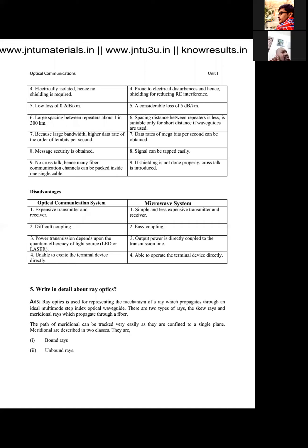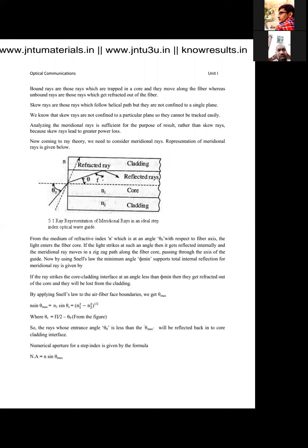Meridional rays are classified into two types: bounded rays and unbounded rays. Optical fiber consists of core and cladding. The core will have refractive index n1, cladding will have refractive index n2, in such a way that refractive index of core is always greater than refractive index of cladding. N1 is greater than n2. This is the primary and foremost condition.